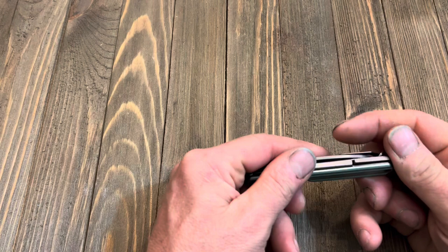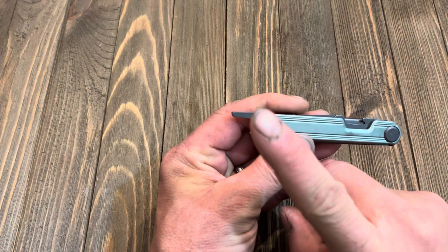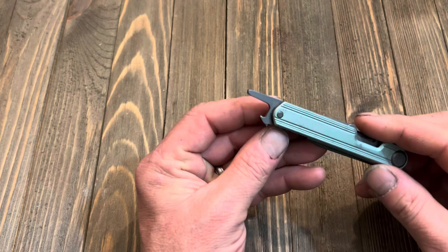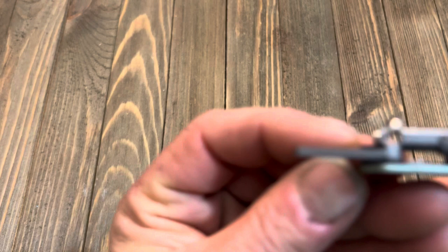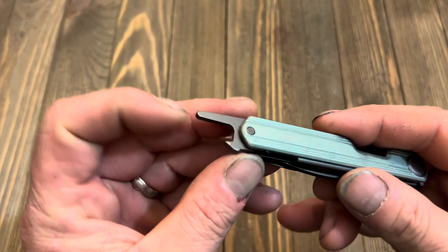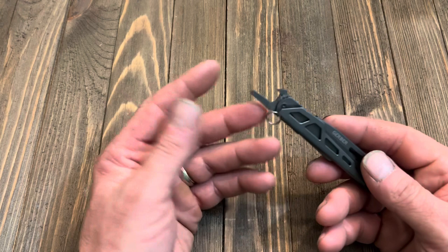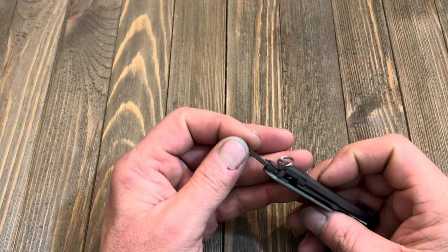Next on the end, we have a pry bar slash lid lifter, also bottle opener as they call it. I've never used it as a pry bar, but it is nice—good thickness, not thin. Works great as a bottle opener and it works as a lid lifter. I work in a body shop, so I open a lot of things and it's worked very well for taking the lids off of cans and it's done very well.